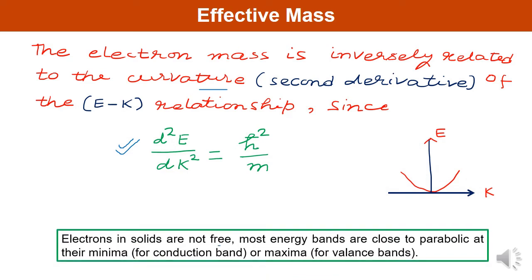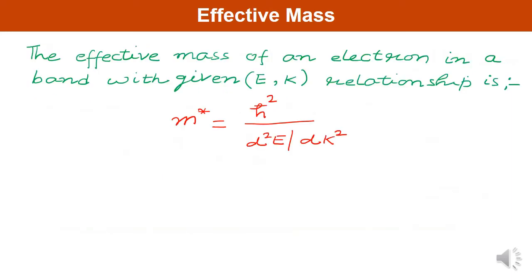Electrons in a solid are not free. Most energy bands are close to parabolic at their minima — minima for the conduction band and maxima for the valence band, as seen in the energy E-K diagram. The effective mass of an electron in a band with a given E-K relationship can be written as M* equals h-bar squared divided by D²E/Dk². From the earlier derivation, D²E/Dk² equals h-bar squared over m, so manipulating these terms gives the effective mass M*.